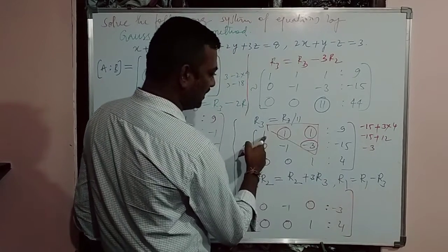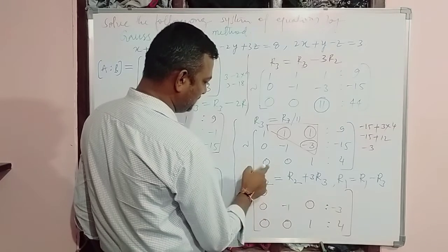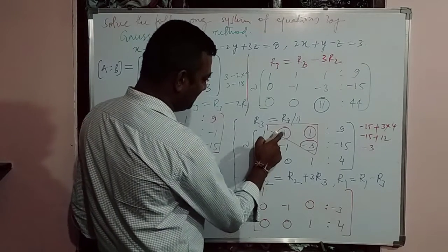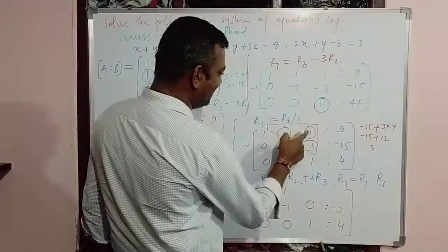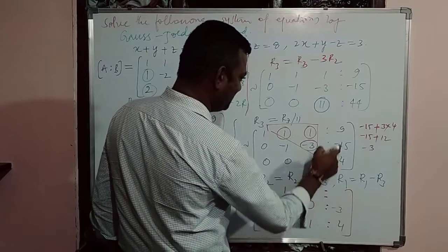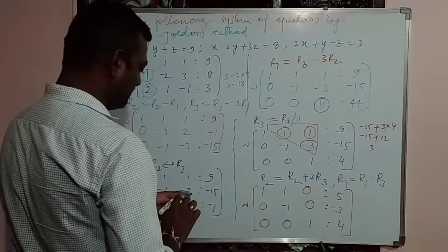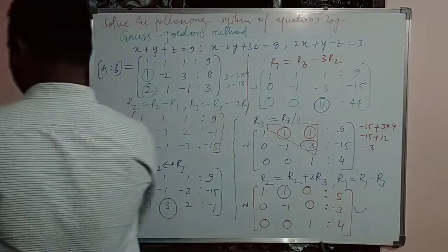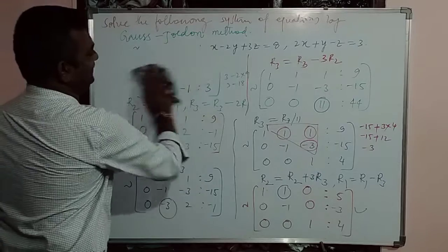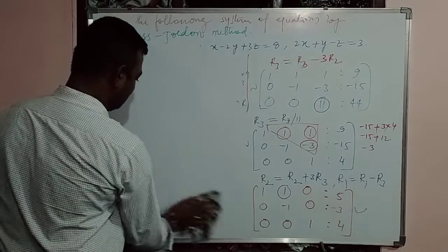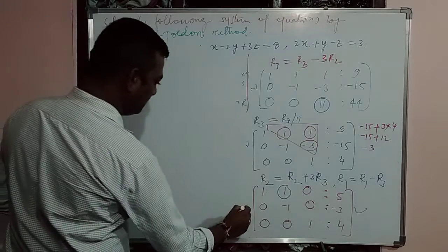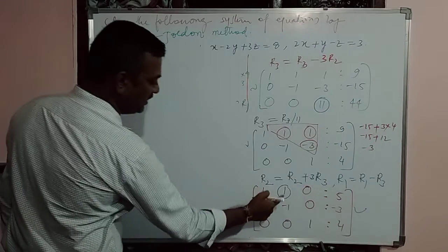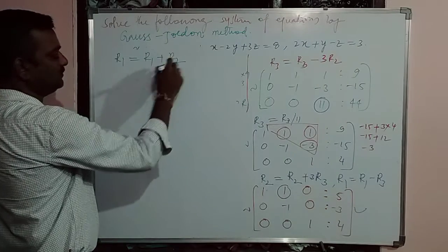We only need to make this remaining element zero using R2 now. That is very easy. The last operation is R1 = R1 + R2. Writing the current matrix in order: Row 3: 0, 0, 1 | 4; Row 2: 0, -1, 0 | -3; Row 1: 1, 1, 0 | 5. Now applying R1 = R1 + R2: 1 + 0 = 1, then 1 plus (-1) becomes 0.